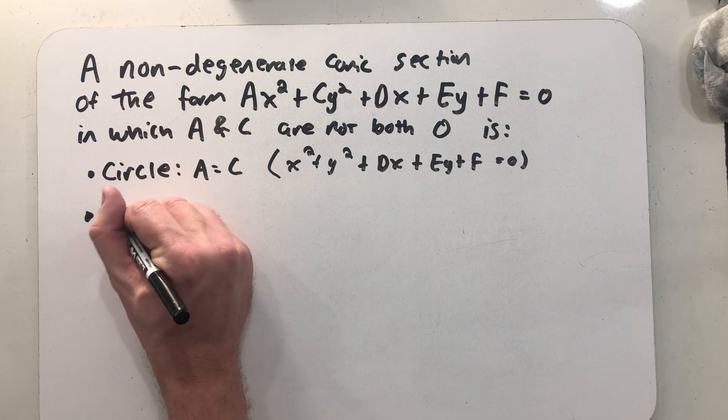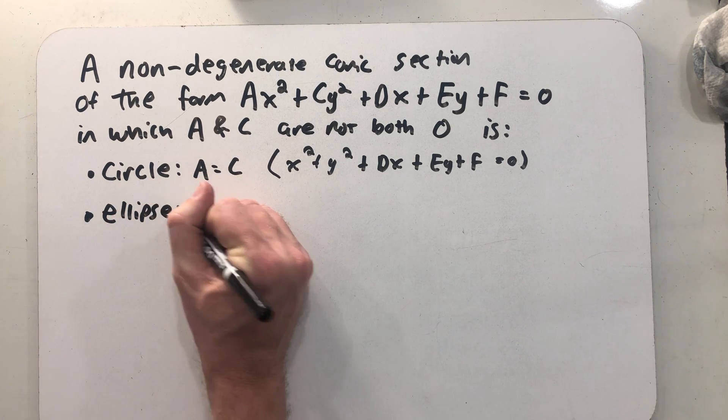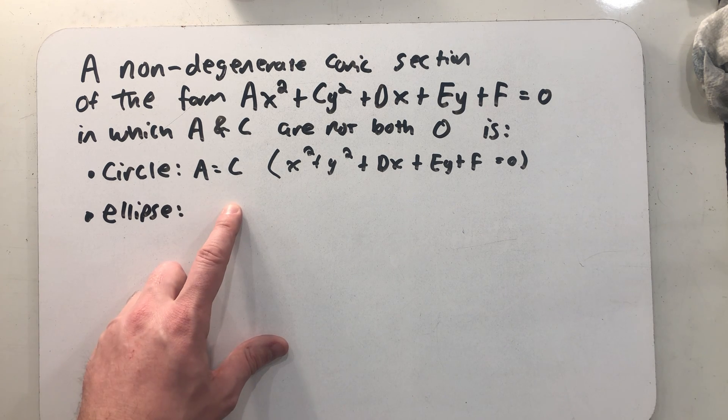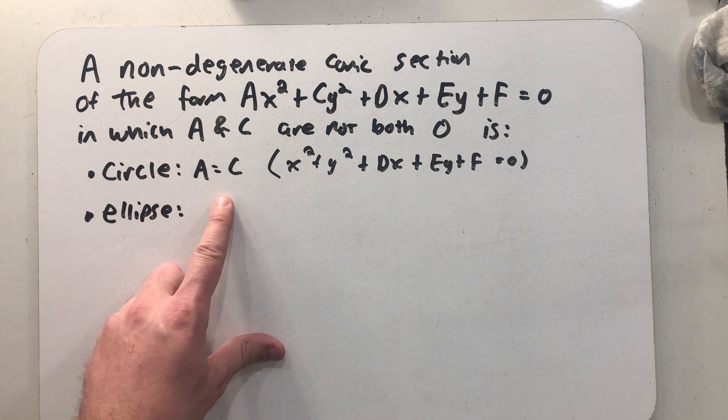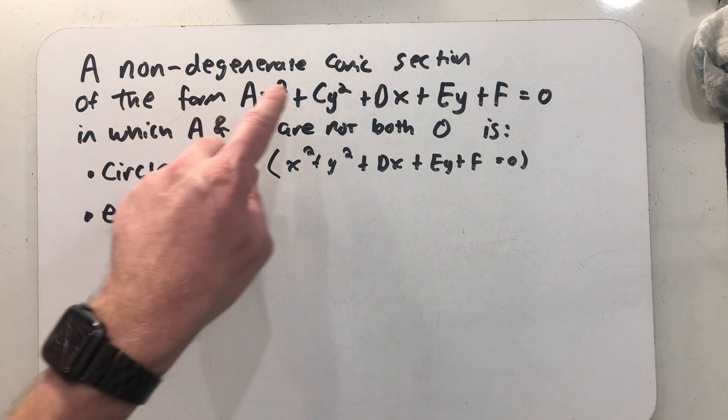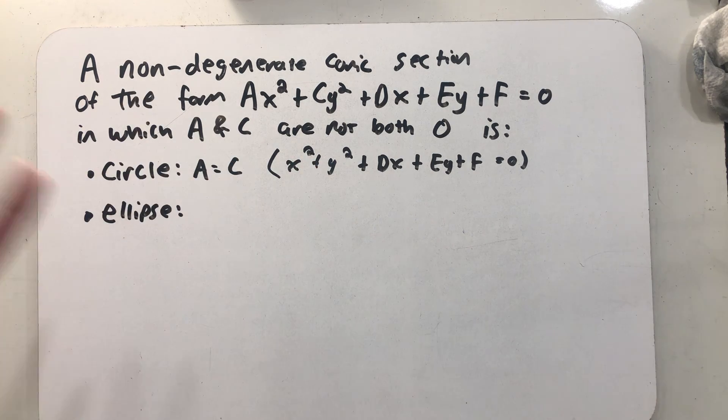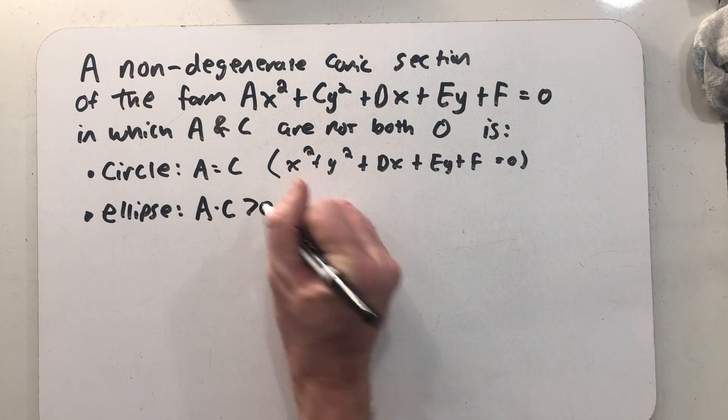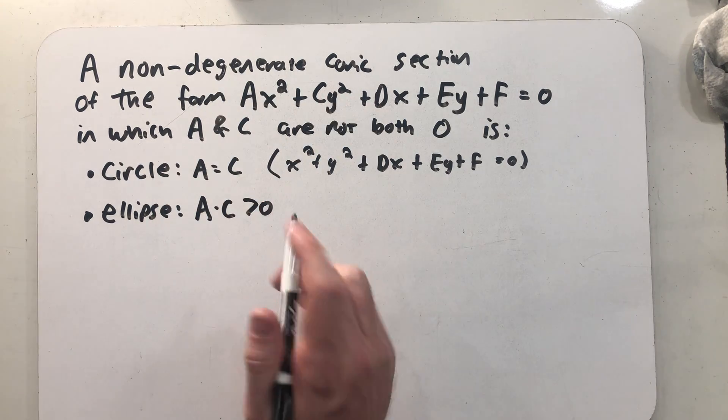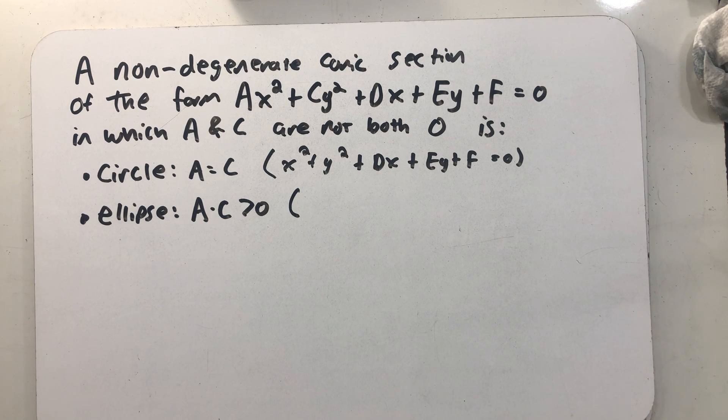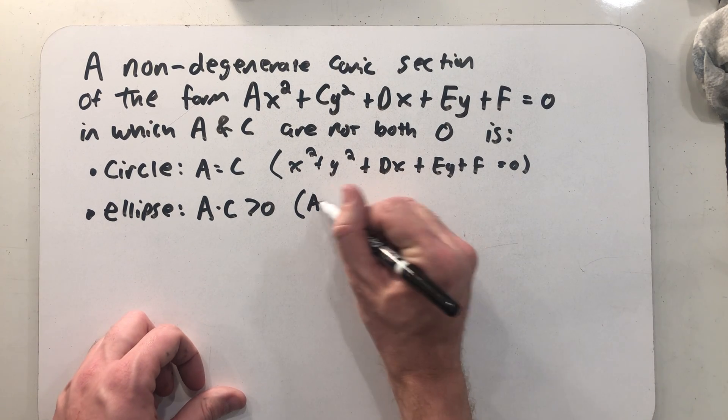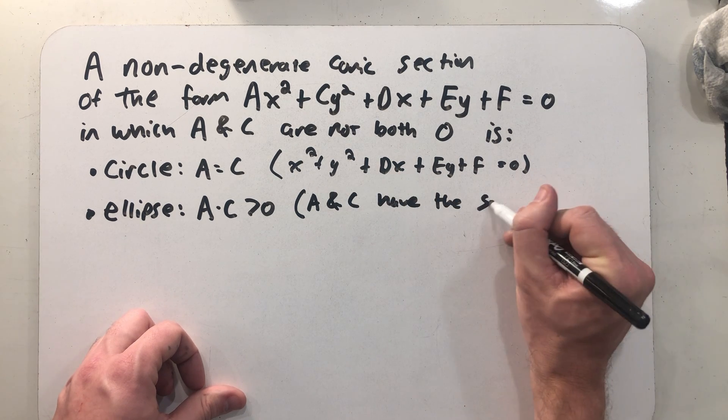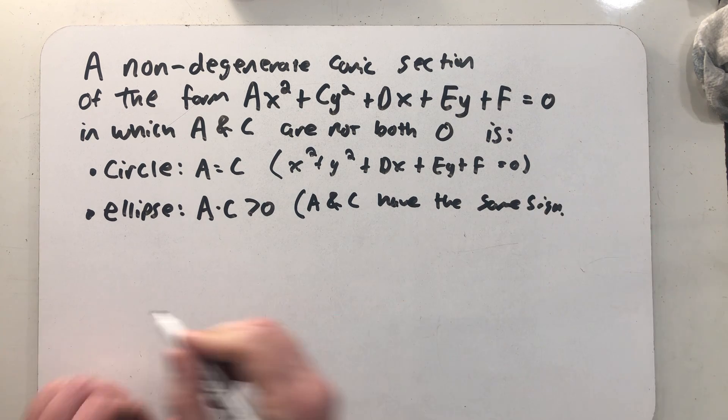Well, after a circle, the next logical place to go is the ellipse. And in the ellipse, a and c aren't going to be the same thing, otherwise we'd have a circle. They need to be different, but they actually both either need to be positive or both be negative. And the easiest way to write that down is if they have the same sign, then a times c is greater than zero. I'll just make the note that a and c have to have the same sign.